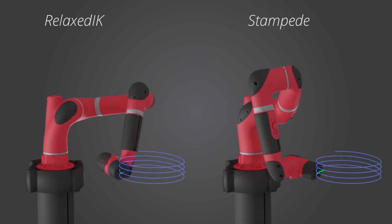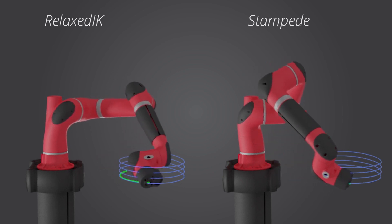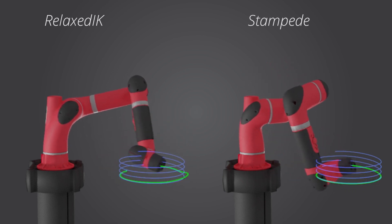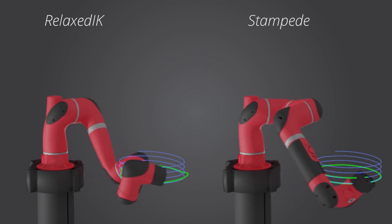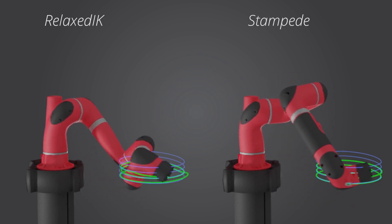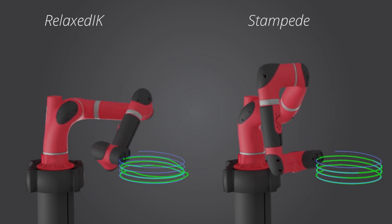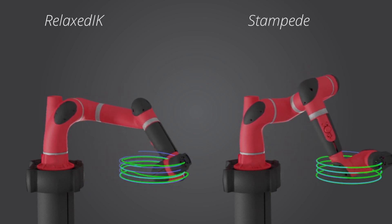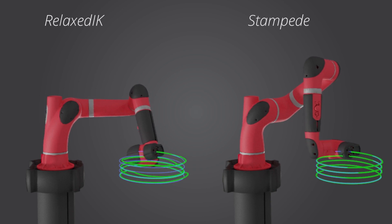Conversely, Relaxed IK, a recently proposed IK method, is able to create smooth and feasible motions on the fly. However, the motions lack high accuracy as the method induces small errors in end-effector space in favor of motion feasibility.